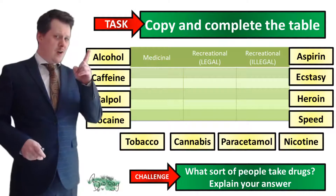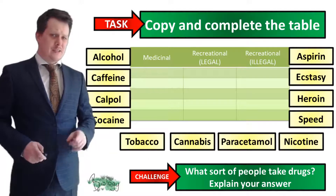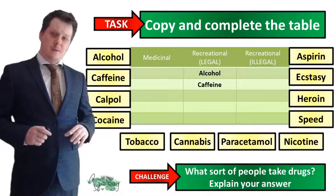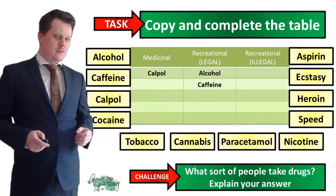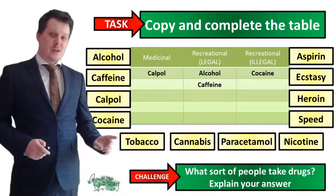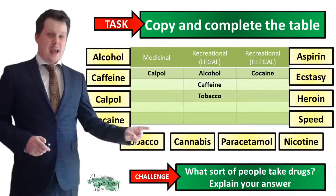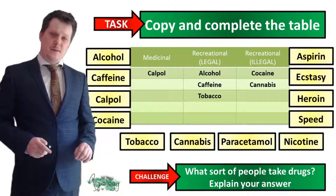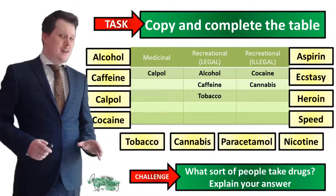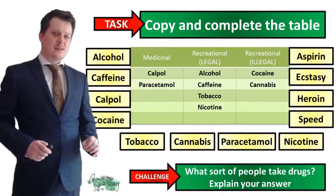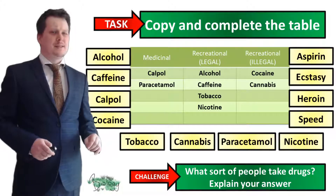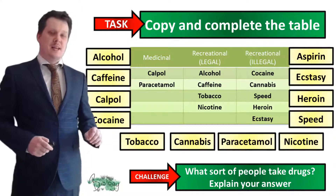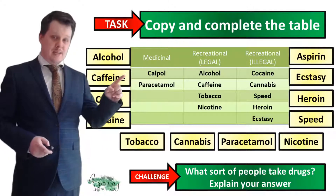Have you got your table filled out? Starting with alcohol and working in an anti-clockwise direction: alcohol is a legal recreational drug; caffeine is a legal recreational drug; Cowpol, because it has some health benefit, is a medicinal drug; cocaine is an illegal recreational drug; tobacco is a legal recreational drug; cannabis is an illegal recreational drug but also has some medicinal benefits, so either column is fine; paracetamol is a medicinal drug; nicotine is a legal recreational drug found in cigarettes; speed is an illegal recreational drug; heroin and ecstasy are both illegal recreational drugs; and aspirin, another painkiller, goes in the medicinal column.